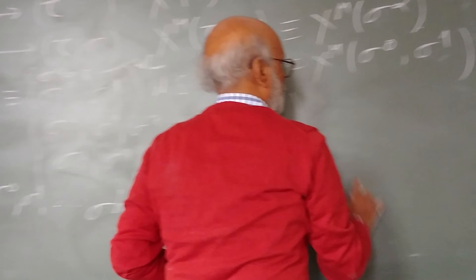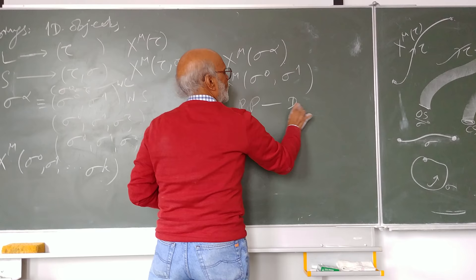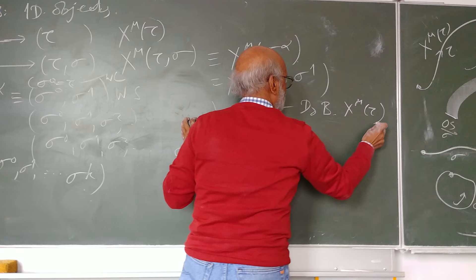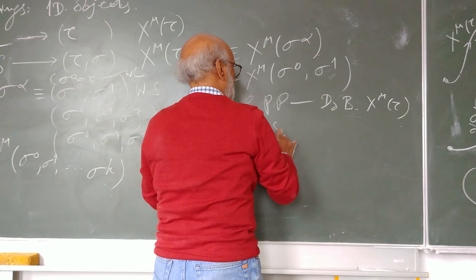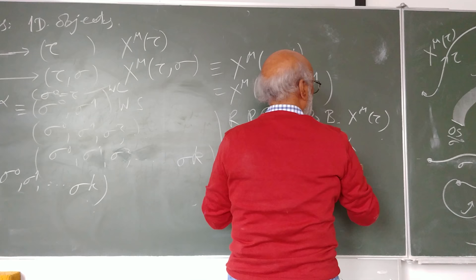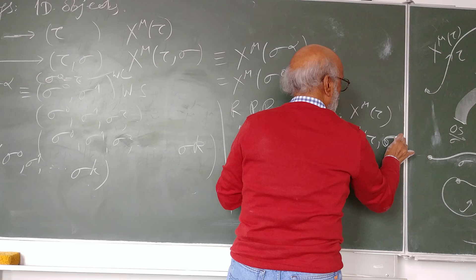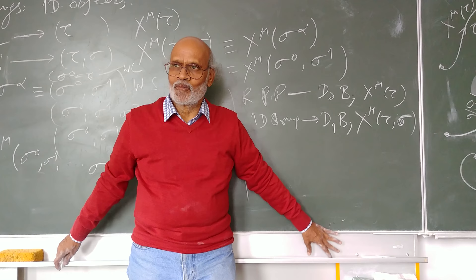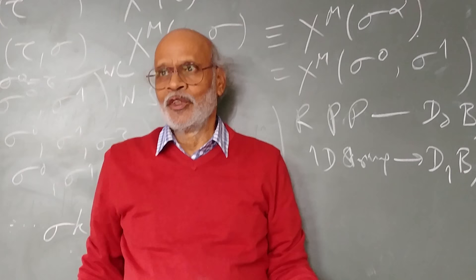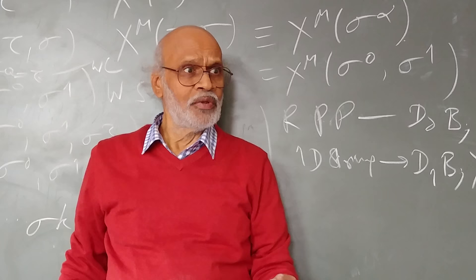You have point particle or v-0 brane with x^mu of tau. And if you have a one dimensional string, it is x^mu of tau and sigma, or sigma^0, sigma^1. Is this concept very clear? Because we have been talking about relativistic point particles all the time so far, and we want to extend our ideas to strings which are one dimensional objects.